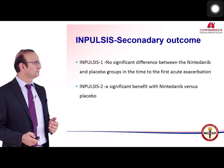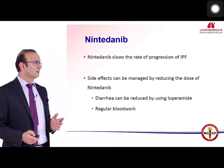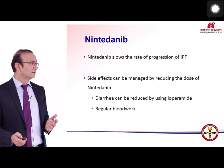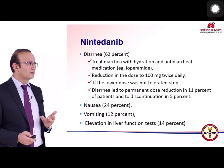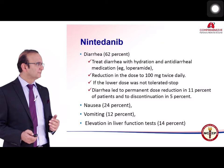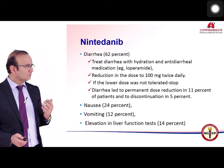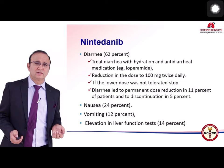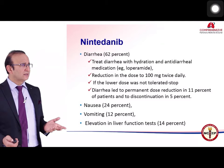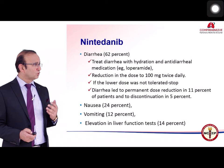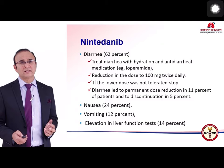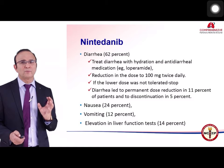In INPULSIS-1, there was no significant difference in time to first acute exacerbation, but INPULSIS-2 showed a significant benefit with nintedanib for time to first acute exacerbation. The bottom line is nintedanib slows IPF progression. The most prominent side effect is diarrhea, occurring in 62 percent of patients. Management includes adequate fluids, antidiarrheal medication such as loperamide, and dose reduction to 100 mg twice daily. Diarrhea led to permanent dose reduction in 11 percent and discontinuation in 5 percent. Nausea occurs in 24 percent, vomiting in 12 percent, and LFT elevation in 14 percent.